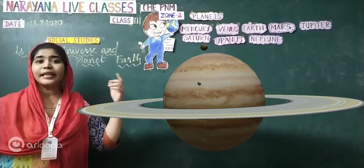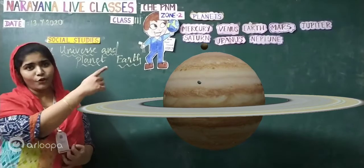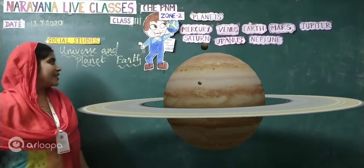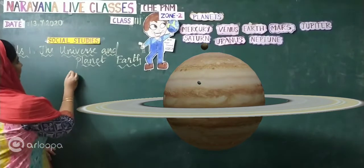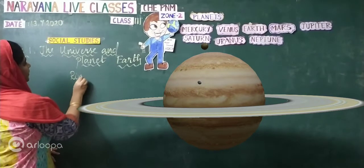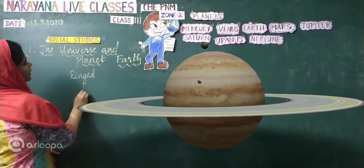You will see rings surrounding Saturn. No children? You can see there are no rings. Yes. Saturn is a ringed planet. Saturn is a ringed planet, children.